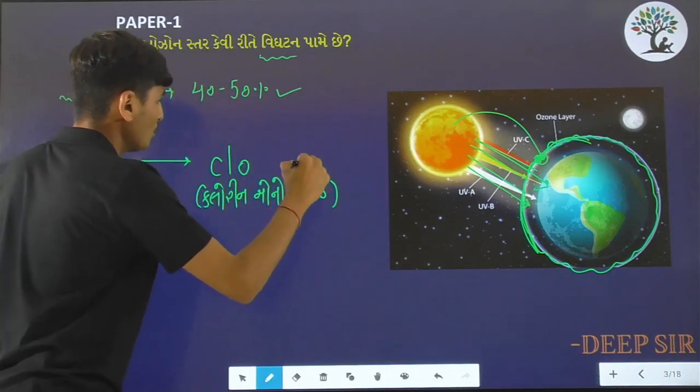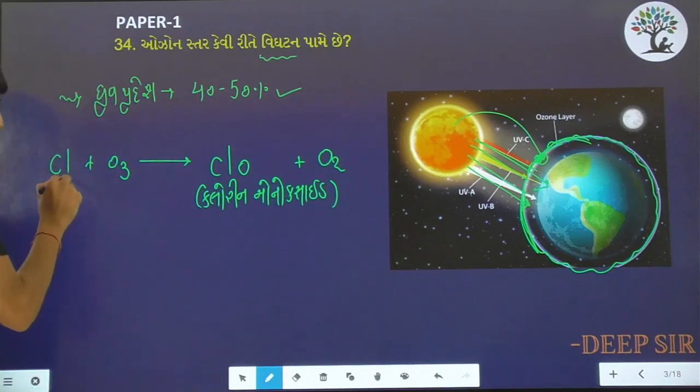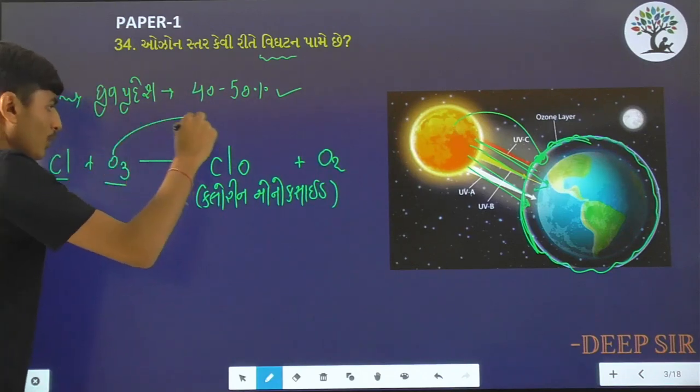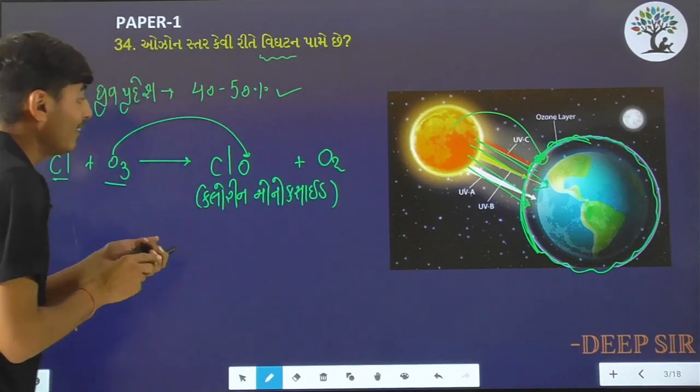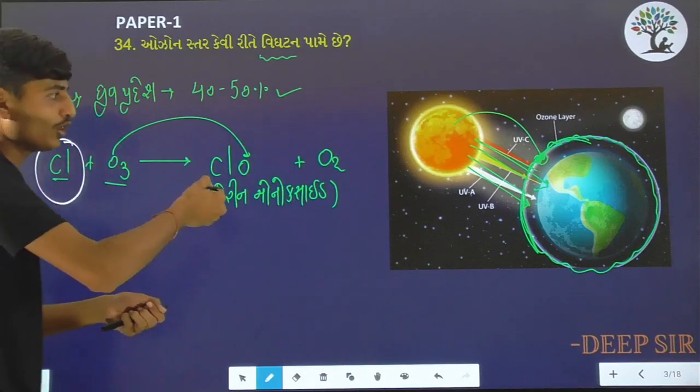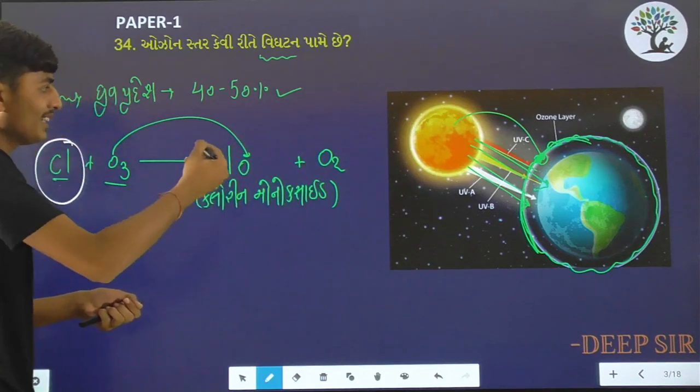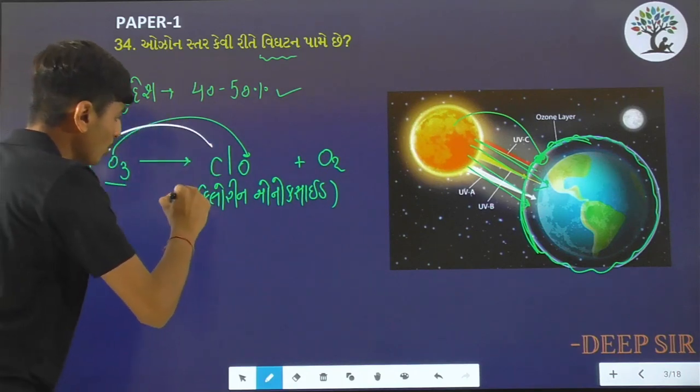Cl plus O3 gives ClO plus O2. O3 is broken down to O2. Cl plus O3 produces ClO plus O2. So this is the first part - chlorine reacts with ozone and makes chlorine monoxide.